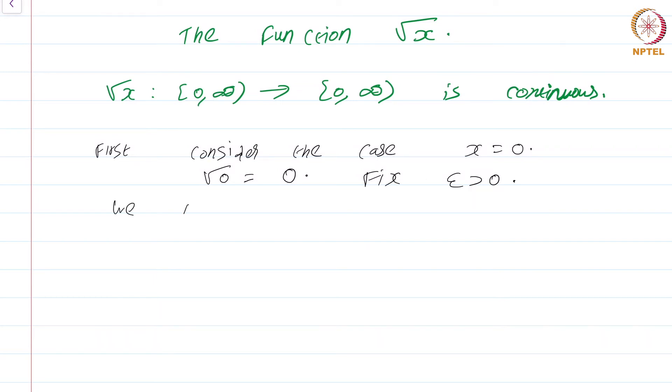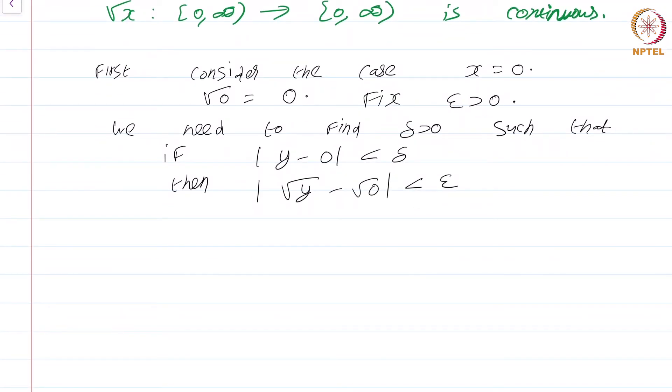We need to find delta greater than 0 such that if mod y minus 0 is less than delta, then mod square root of y minus square root of 0 is less than epsilon. So essentially we have to find a delta such that mod y less than delta implies square root of y less than epsilon.